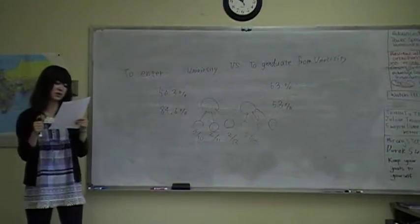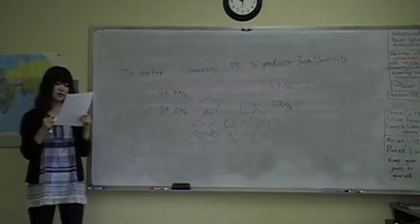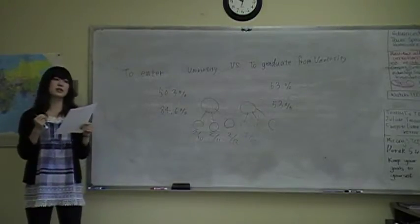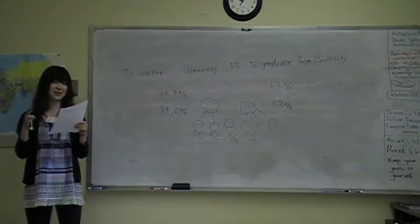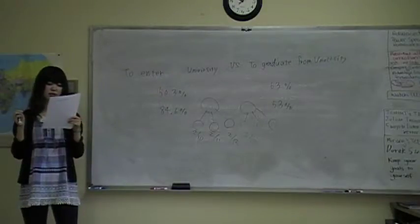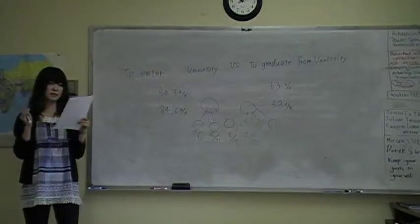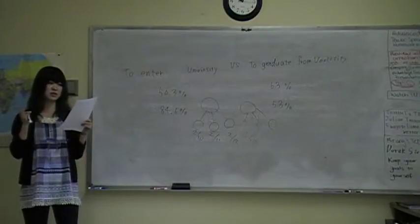If the student is smart, they can graduate with two or three majors in only four years. They can graduate from university in less than four years. So if they are very smart, they can graduate from university in only three years.